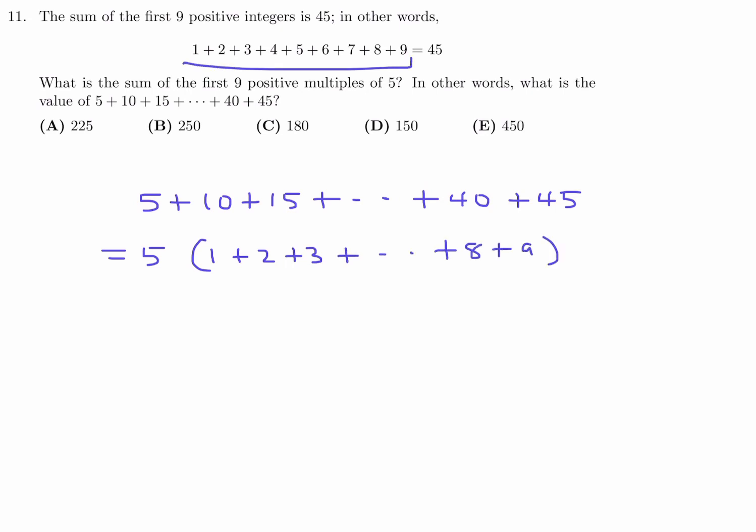Which is exactly right here, and therefore this guy is 45. So they helped you out a little bit. Now I just have to do 5 times 45, which is 225. So at number 11, the answer is A.